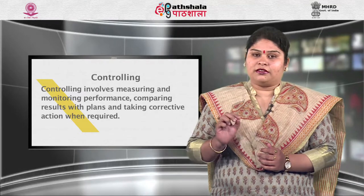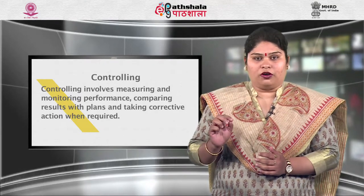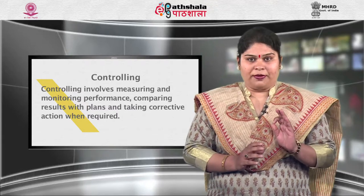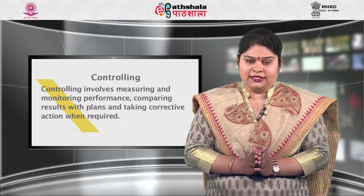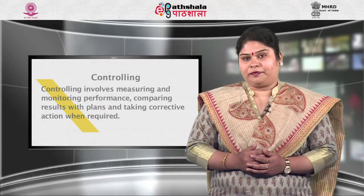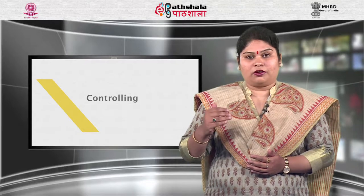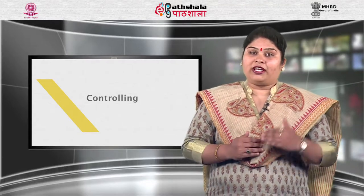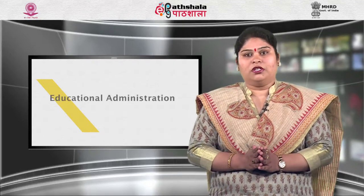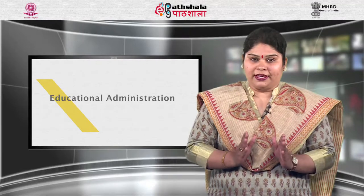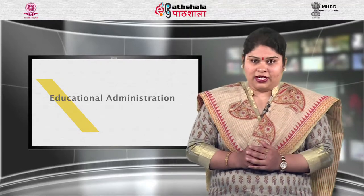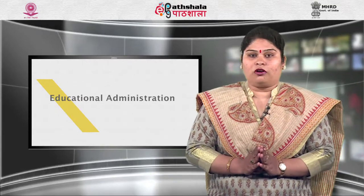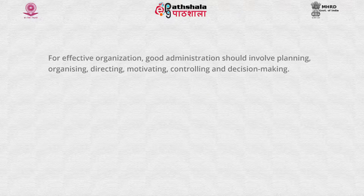Controlling involves measuring and monitoring performance, comparing results with plans and taking corrective action when required. It indicates how far the goals have been achieved and to what extent there is deviation from the plans. The administration is concerned with managing resources, allocating tasks, making decisions and solving problems. For effective organization, good administration should involve planning, organizing, directing, motivating, controlling and decision making.